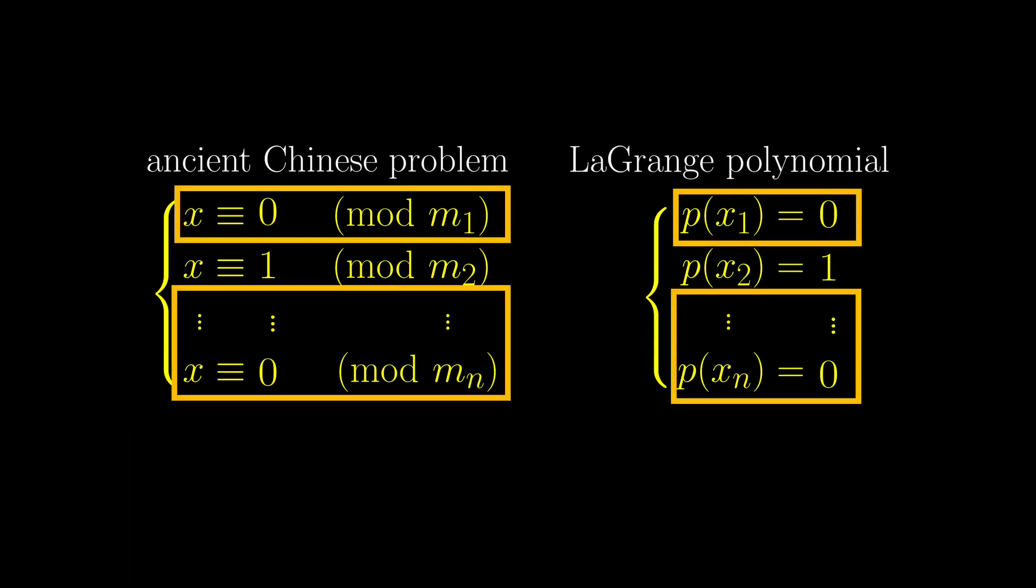For both problems, we first solve for all the equations except for the one with 1 in it. This is pretty easy for both problems. Then we adjust the solution by multiplying by something so that the remaining equation is also satisfied. This adjusting step, however, is much more difficult for the Chinese problem in general.